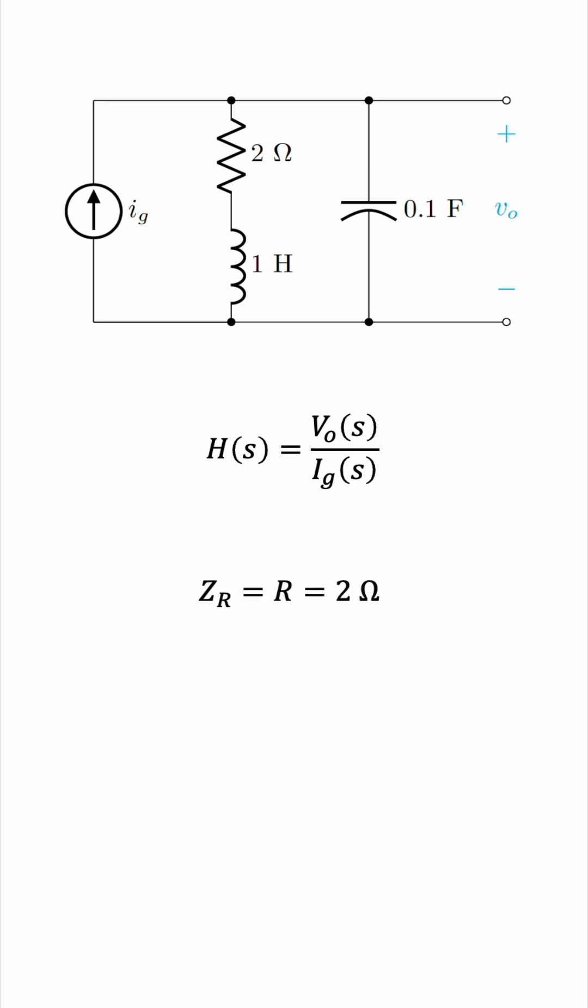The impedance of an inductor is S times its inductance, so this will be S ohms for this circuit. And the impedance of a capacitor is 1 over S C. The capacitance is 0.1 farad, so this will be 10 over S ohms.